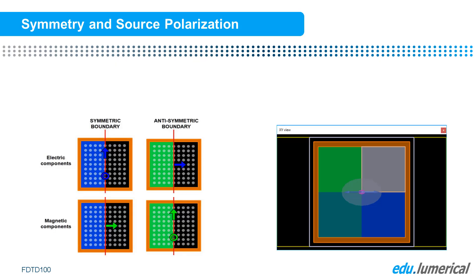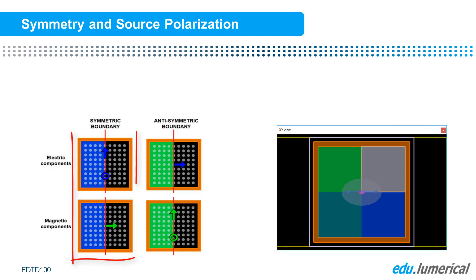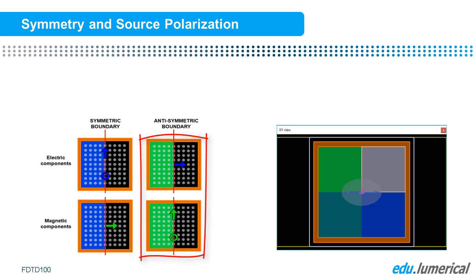To check that the appropriate symmetry conditions are chosen for a given source polarization, you can simply check the CAD view. If the color of the shaded half of the simulation region matches the color of the source polarization arrow, the shading should be parallel to the source arrow direction. If the color of the shaded region does not match the source arrow, the shading cuts through the arrow perpendicularly.